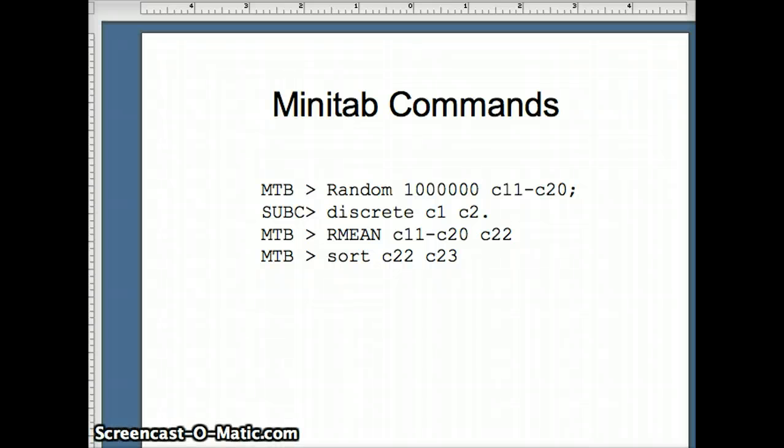And then here's our commands. Notice I'm saying random 1 million, and I'm saying C11 to C20. Why C11 to C20? I need to have 10 numbers in that row. Discrete C1, C2 is the command that we're going to use to select with replacements. Then our mean, C11 through C20, take the row mean for those 10 numbers and put it into C22. And then the command is sort C22, C23. So in C23 will be a million averages. Each of the averages is constructed from these 10 numbers. And those 10 numbers are selected with replacement from our original sample.